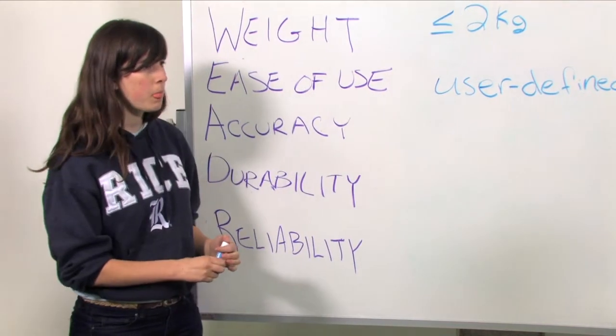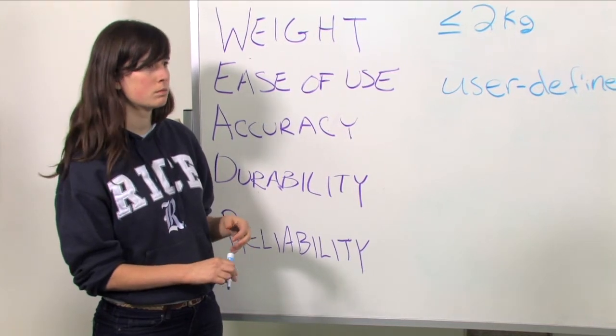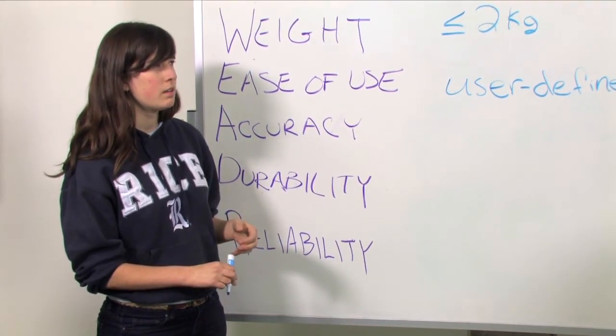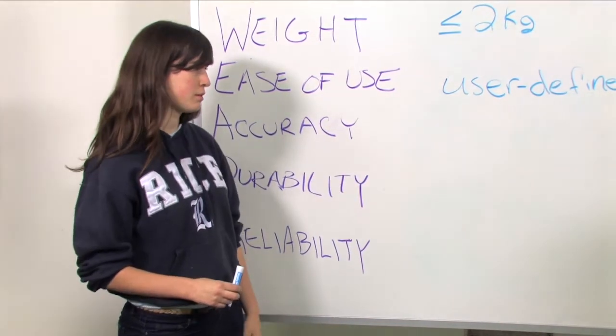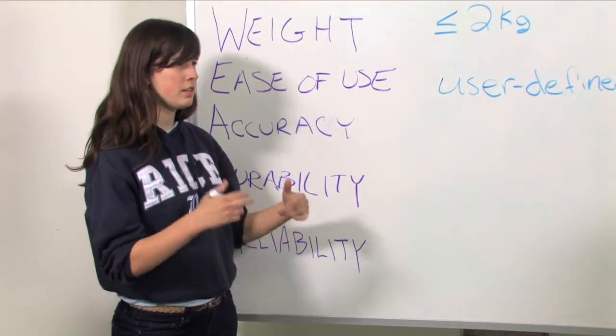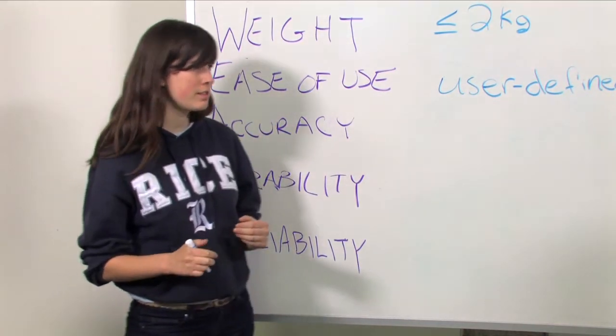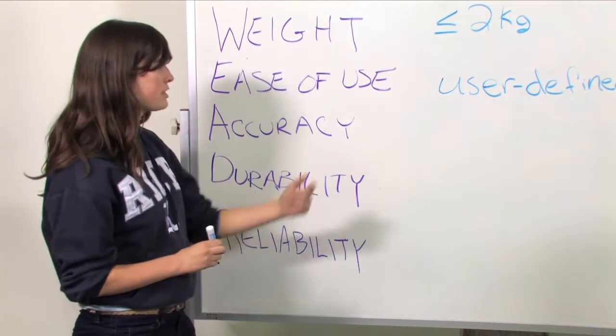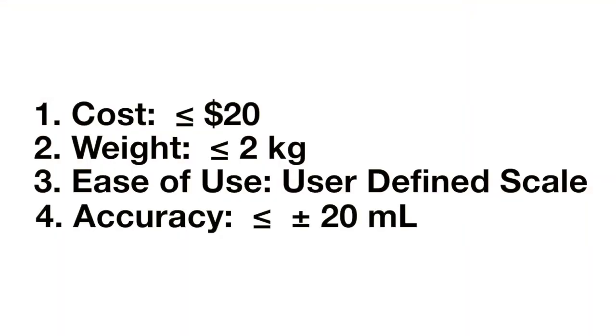And then do we want that to be 20 milliliters across all volume suspense? Because if we did like a percent, do you think that would be better? No. So if you had like 800 milliliters, and if it was a percentage, it would kind of accumulate the error. Oh, you're right. It would be dangerous on volume. So I think we should keep it as a volume of 20 milliliters. So plus or minus 20 milliliters.